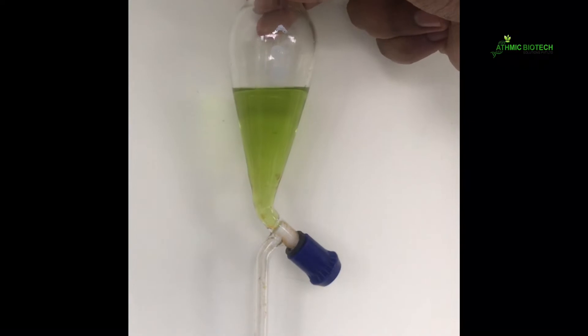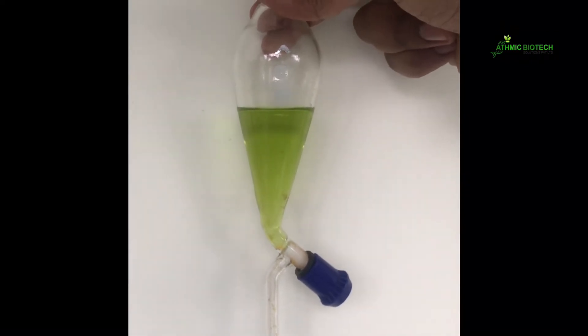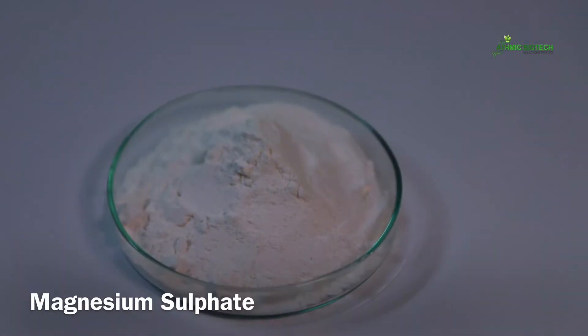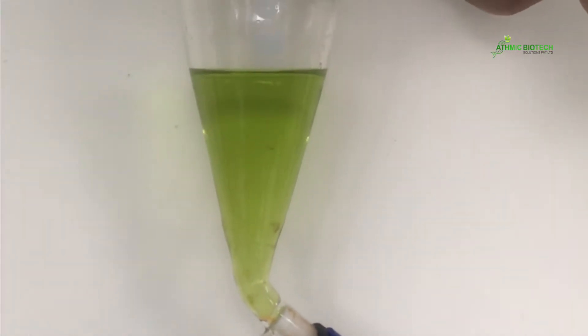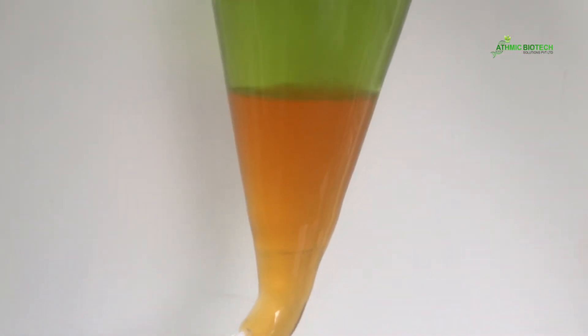The acetone extract is collected in a separating funnel. Then a few pinches of magnesium sulfate are added to remove the water content in the separating funnel. Added excess hexane to separate into two layers.